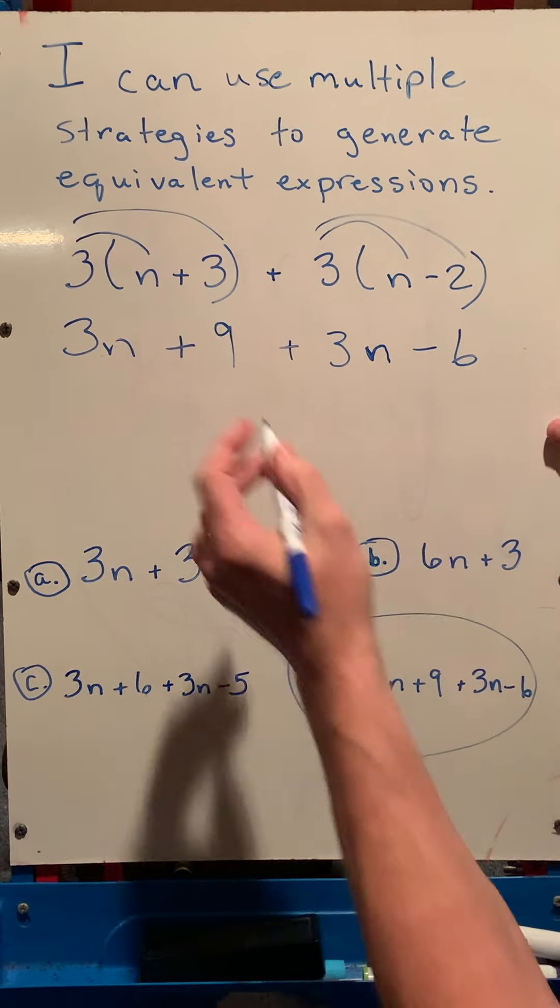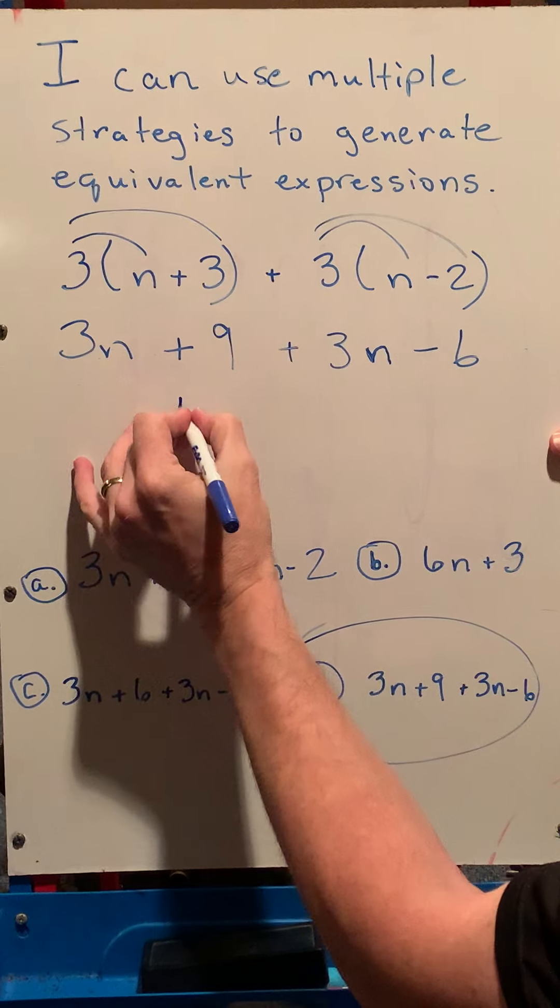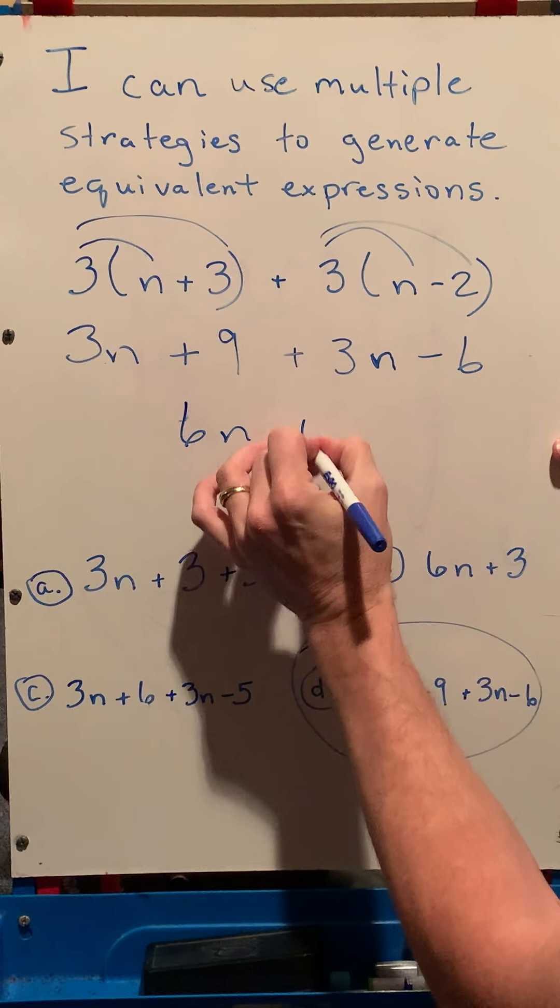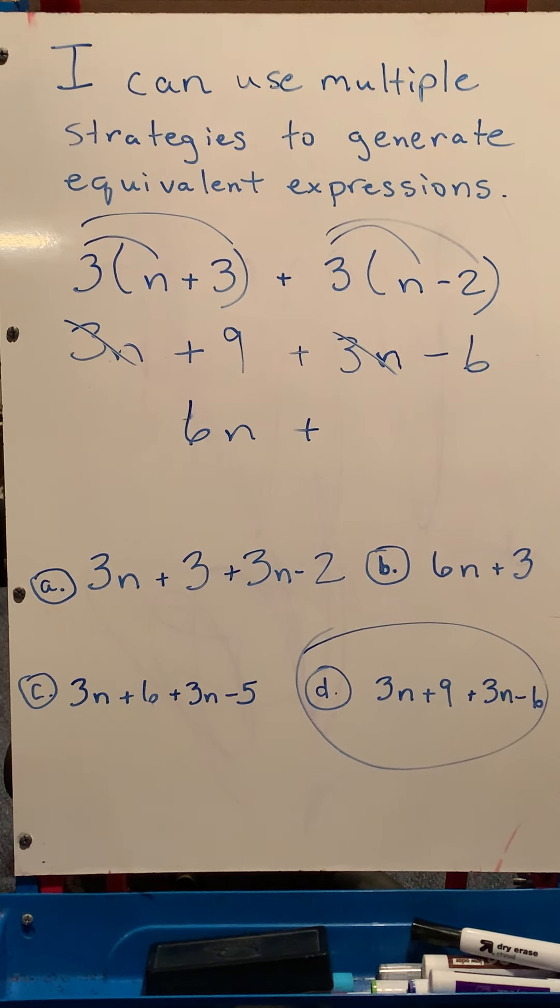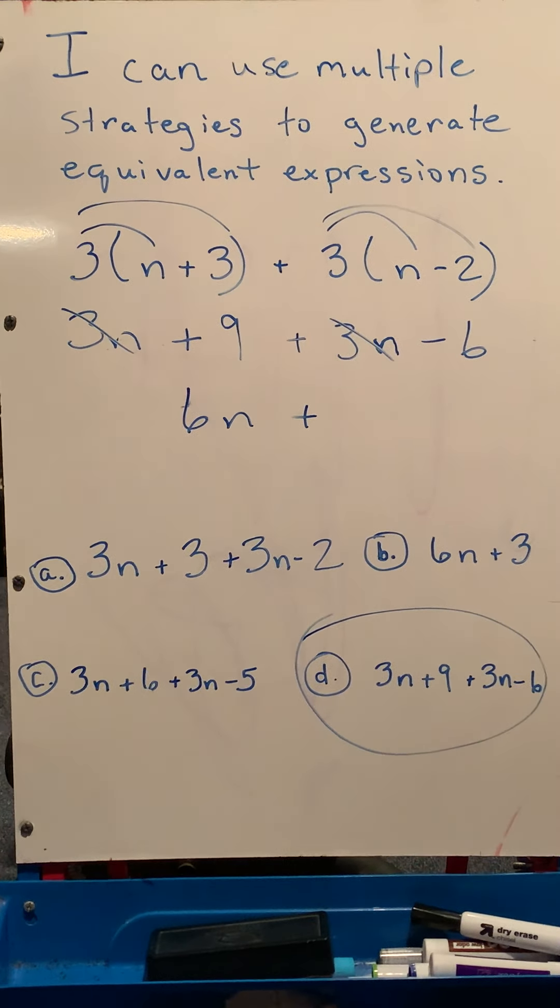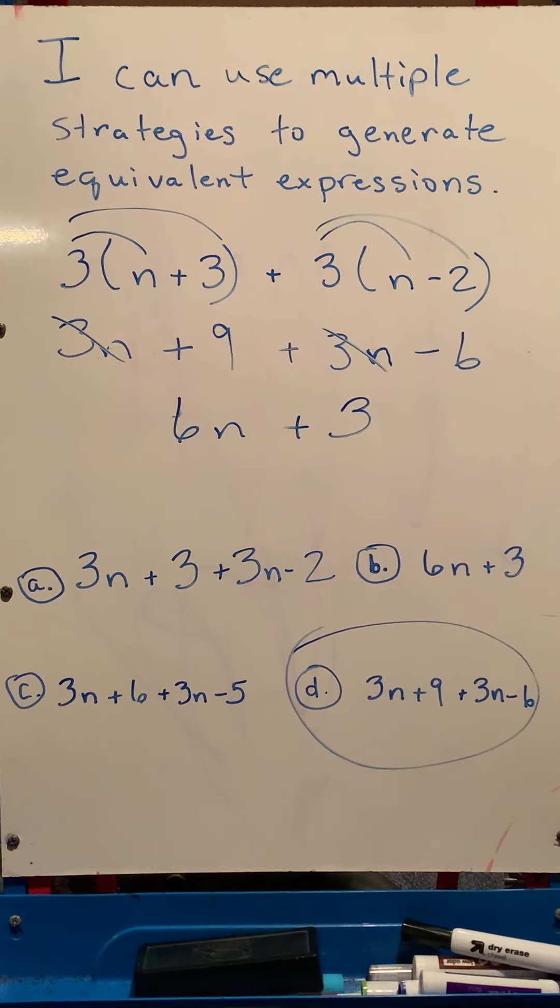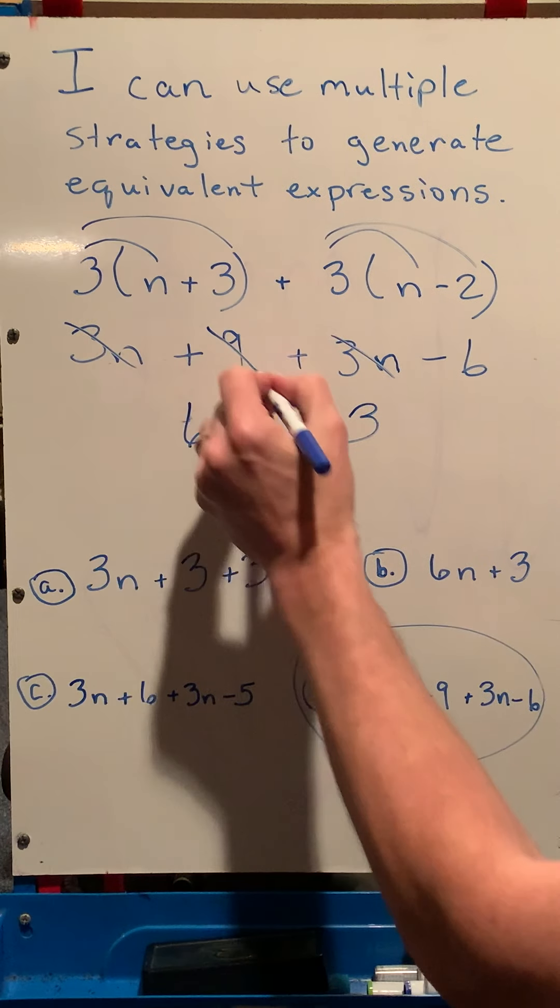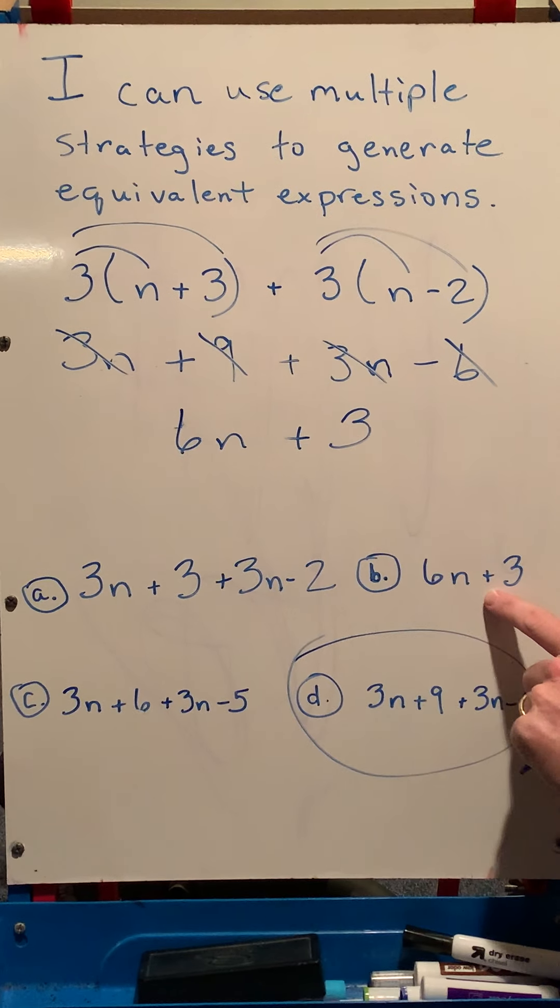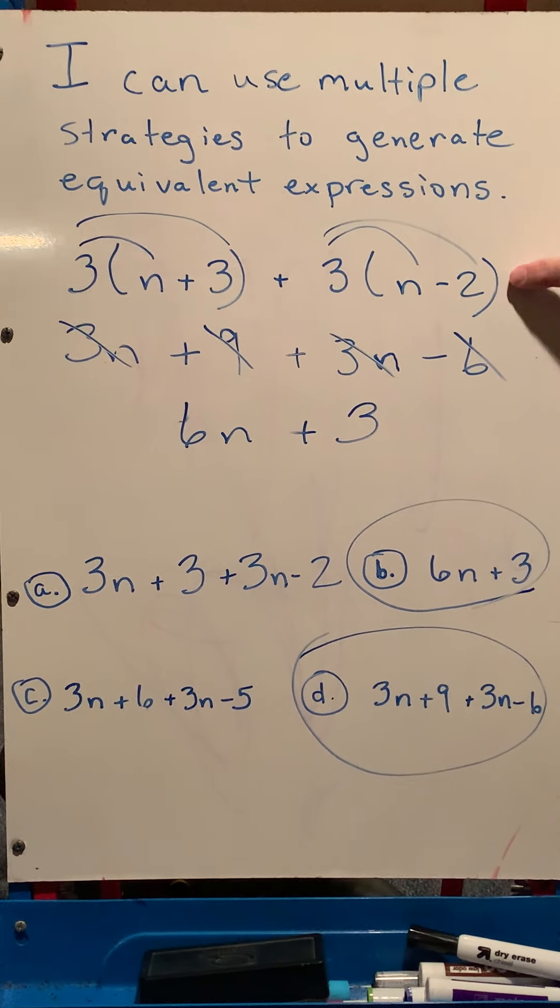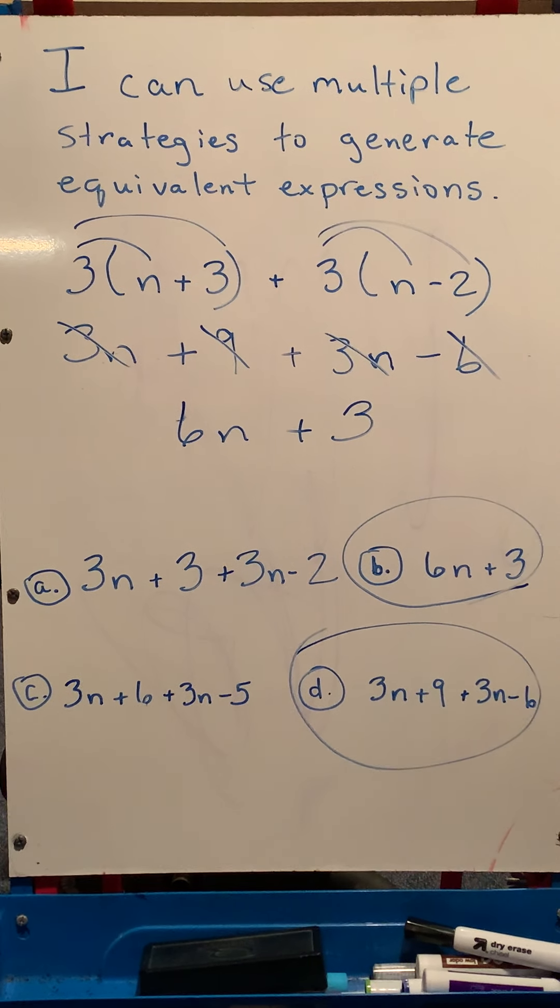So let's go ahead and combine terms up here. Here, this is 3n plus 3n, which is 6n, plus 9, take away 6. So like our lesson the other day, that would end up, I still have a positive 3. So I've got 6n plus 3. And that's in simplest form when I've combined my like terms. And I look at my choices. B is 6n plus 3. So we know this is also equivalent to our original, as was this. So these are all the same value.